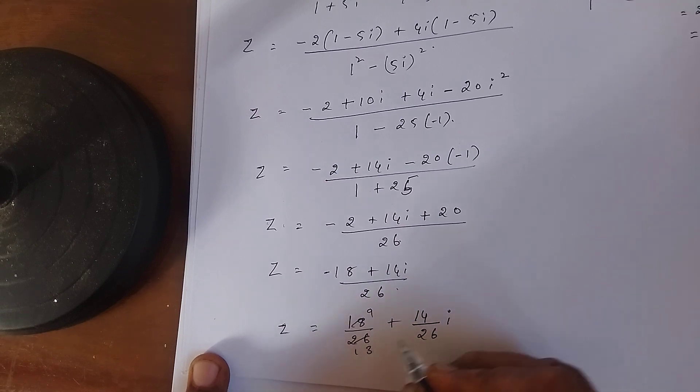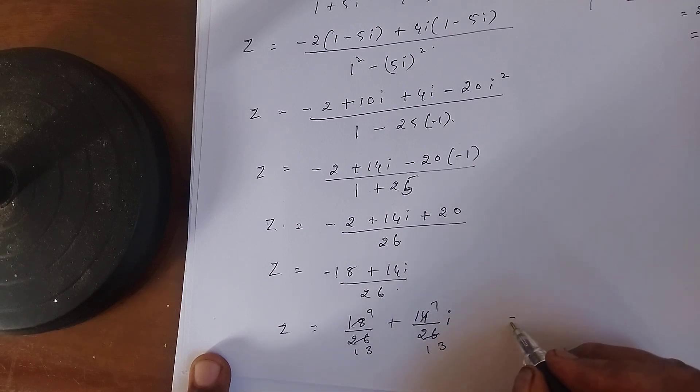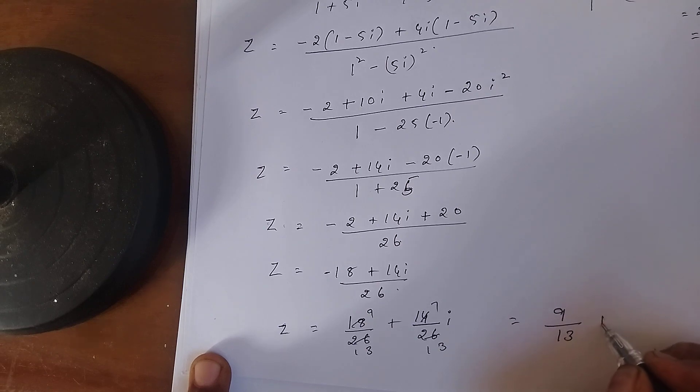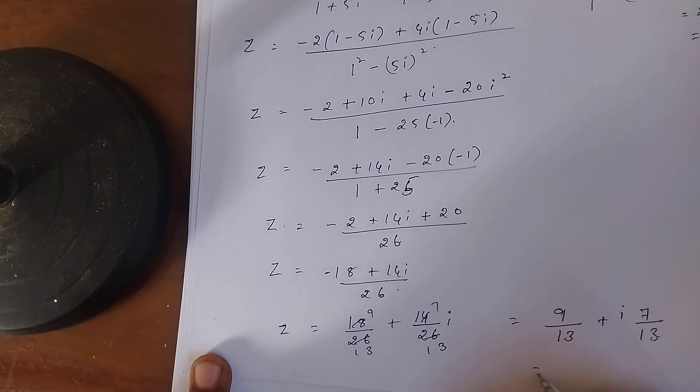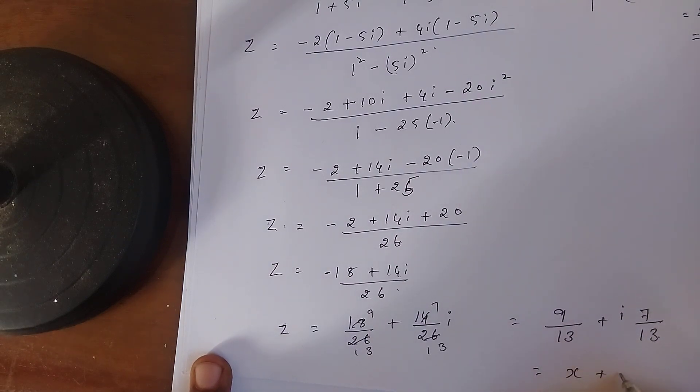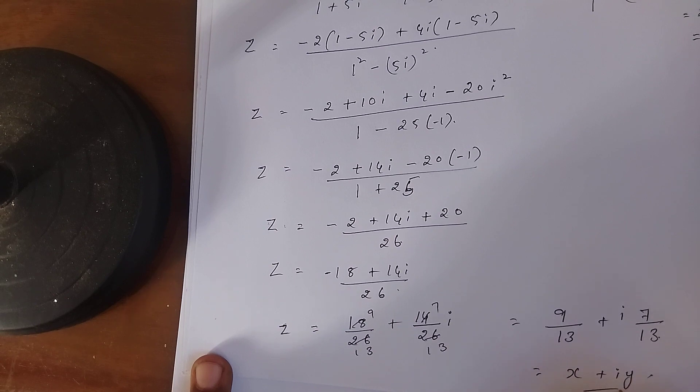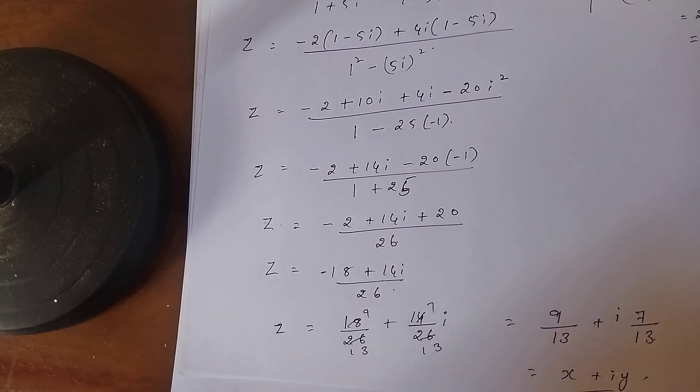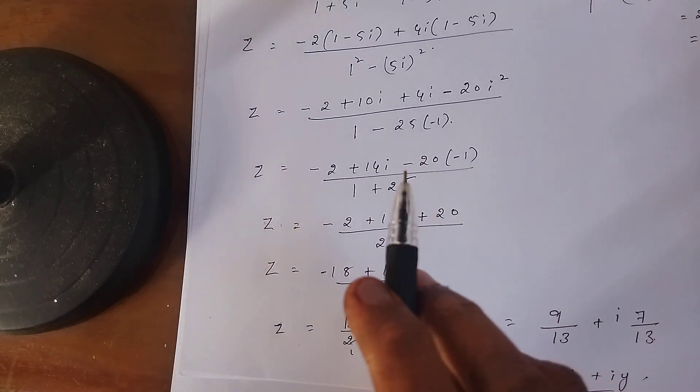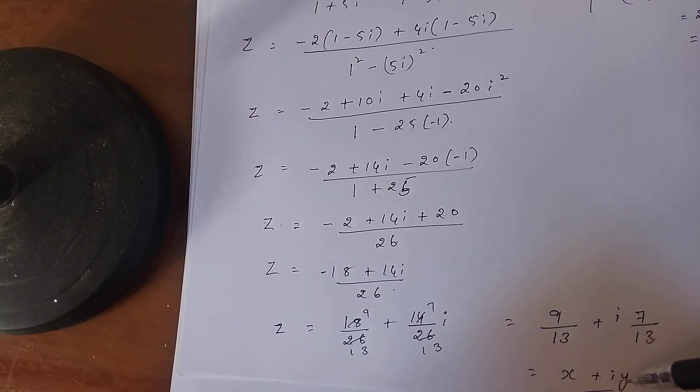Which equals 9/13 plus i times 7/13. This is of the form x+iy. I hope you understood how to solve this problem in the form of x+iy. Thank you for watching my video. Please like and subscribe my channel.